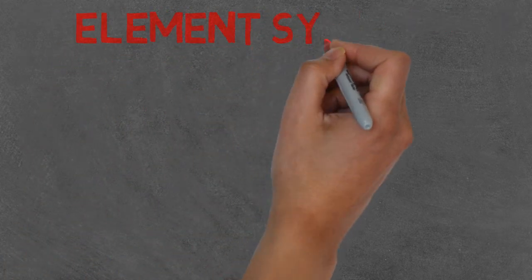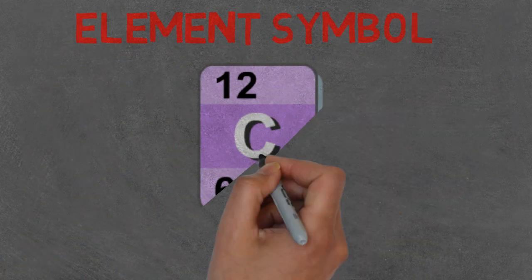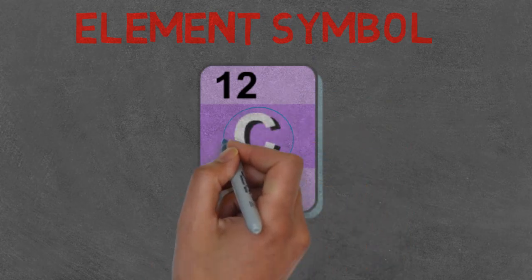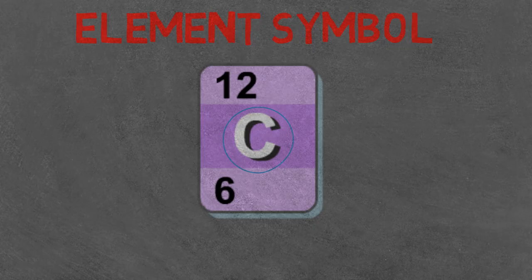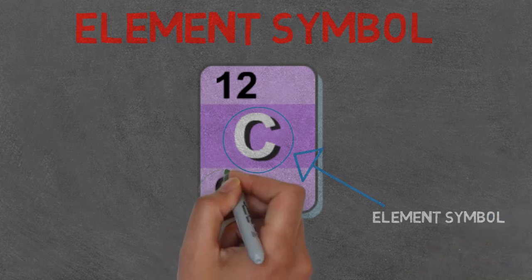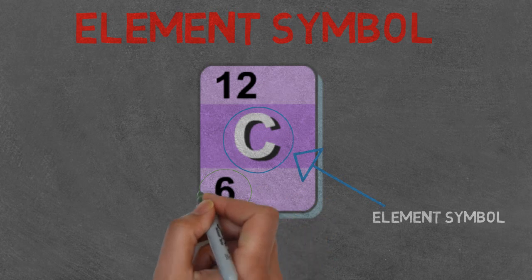So if we look at an element on the periodic table, for example carbon, we see that it has two sets of numbers and a letter. The C is carbon's element symbol and this is how it is represented in chemical formulas. For example, CO2, so what we breathe out, the C stands for carbon and the O stands for oxygen.